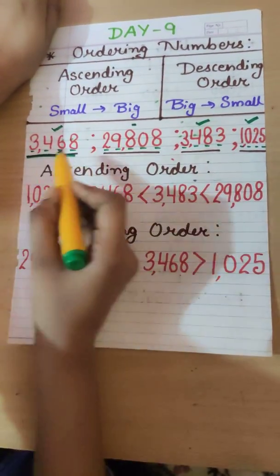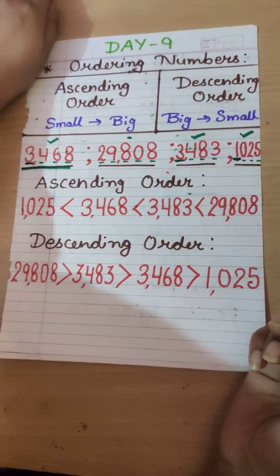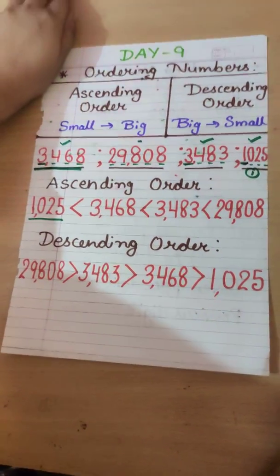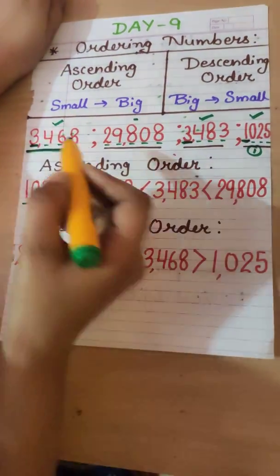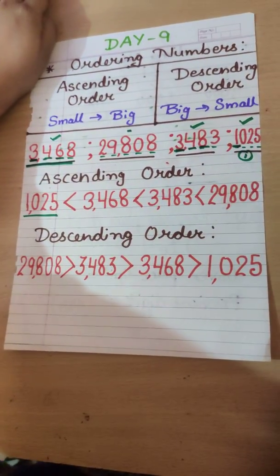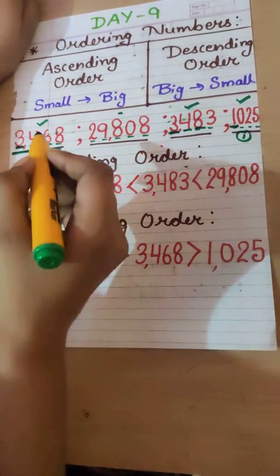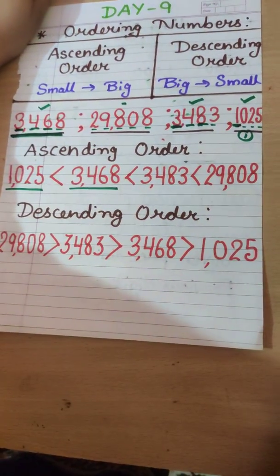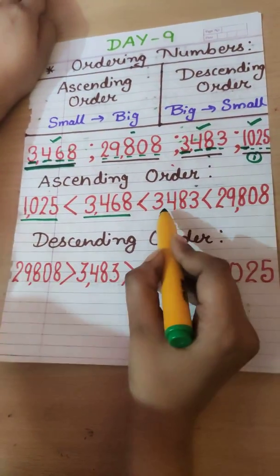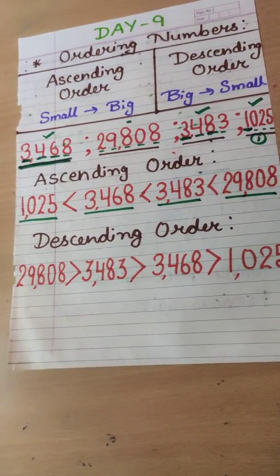So let's compare these four-digit numbers. The leading digits are 3, 3, and 1, so we find our first number in ascending order is 1,025. Now comparing the next numbers: 3 and 3 are the same, 4 and 4 are the same, then we compare 6 and 8 — 3,468 is smaller than 3,483. So 3,468 is our second number, and then 3,483. At last, our five-digit number 29,808. So this is the ascending order.